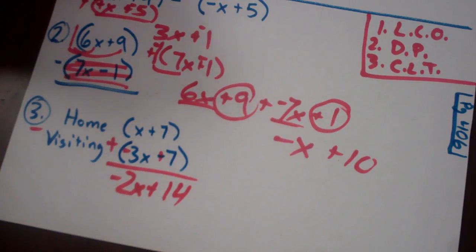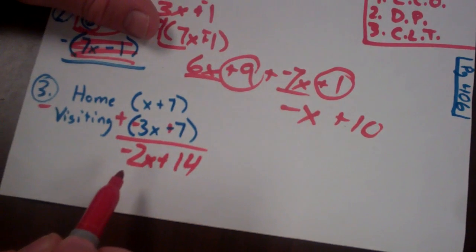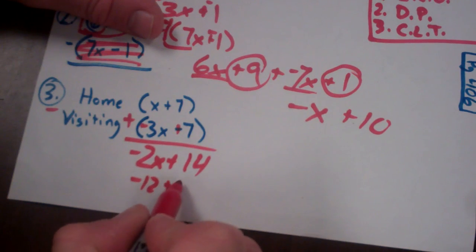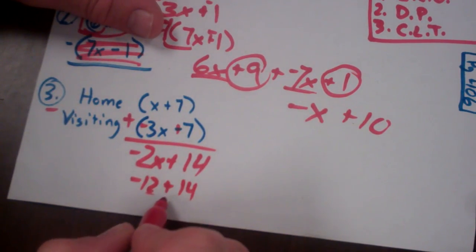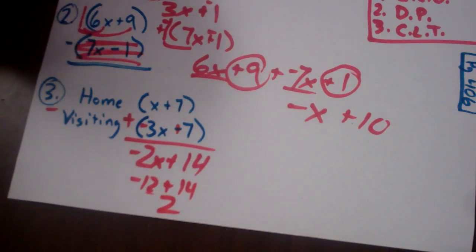It says then evaluate the expression if the value of x is 6. So if the value of x is 6, well negative 2 times 6 is negative 12. Negative 12 plus 14 is positive 2. So your 2 runs would be the correct answer then.